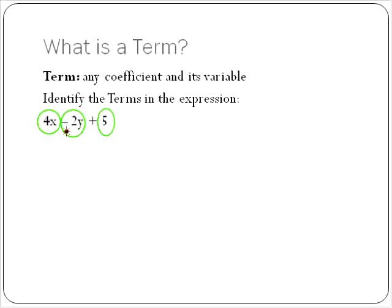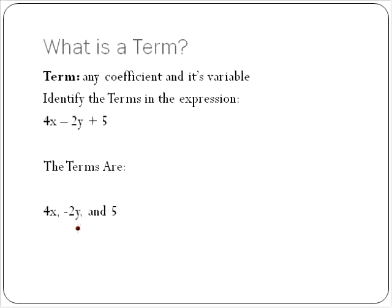Notice that when there's a negative number, that's included in the term. So our terms are 4x, negative 2y, and 5. Those are the three terms inside this expression.